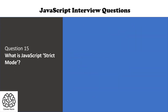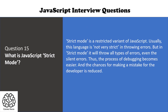The next question is: what is JavaScript strict mode? Strict mode is a restricted variant of JavaScript. Usually the language is not very strict in throwing errors, but if you use strict mode, it will throw errors of all types, even silent ones. This makes the process of debugging easier and reduces the chances of making mistakes in the code.